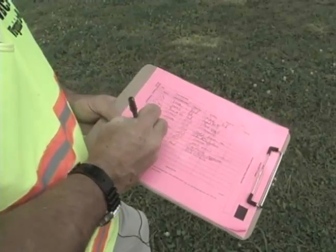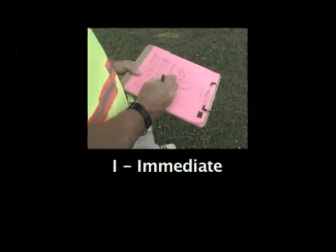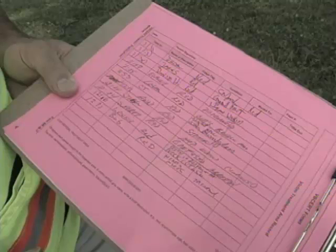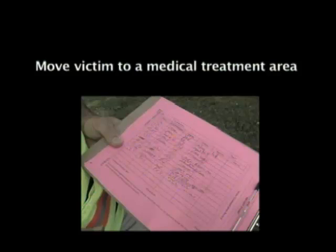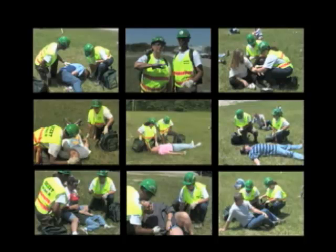After you triage victims in an area, document what you've done. Record the number of victims by I, D, or dead category and their locations. This documentation will be important for your team if you move victims to a central medical treatment area and will help other responders when they arrive on scene. Medical triage is the key to doing the most good for the most people whenever there are more victims than rescuers, resources are limited, and time is critical. Follow these steps and you will provide victims the most effective, life-saving support available.